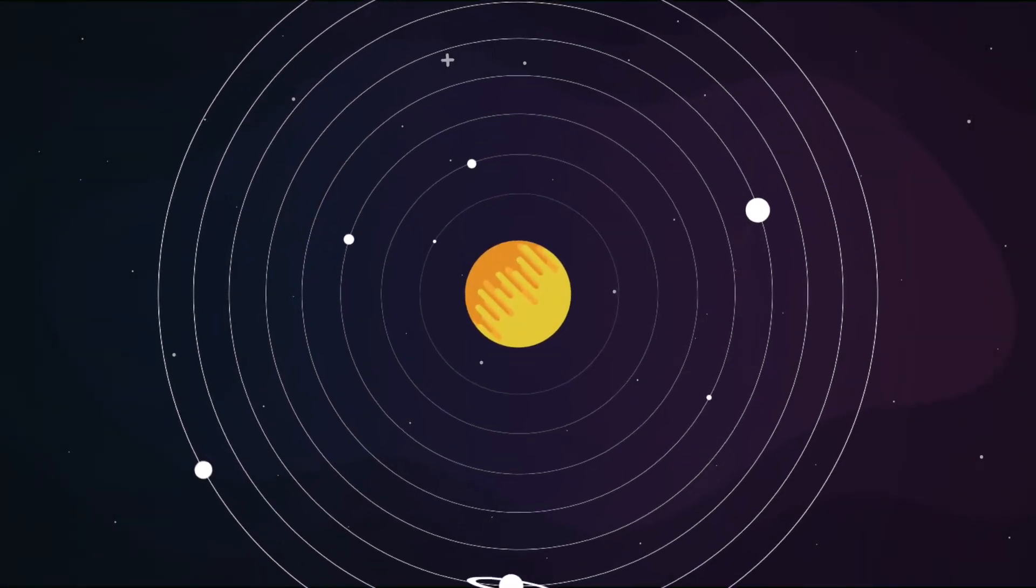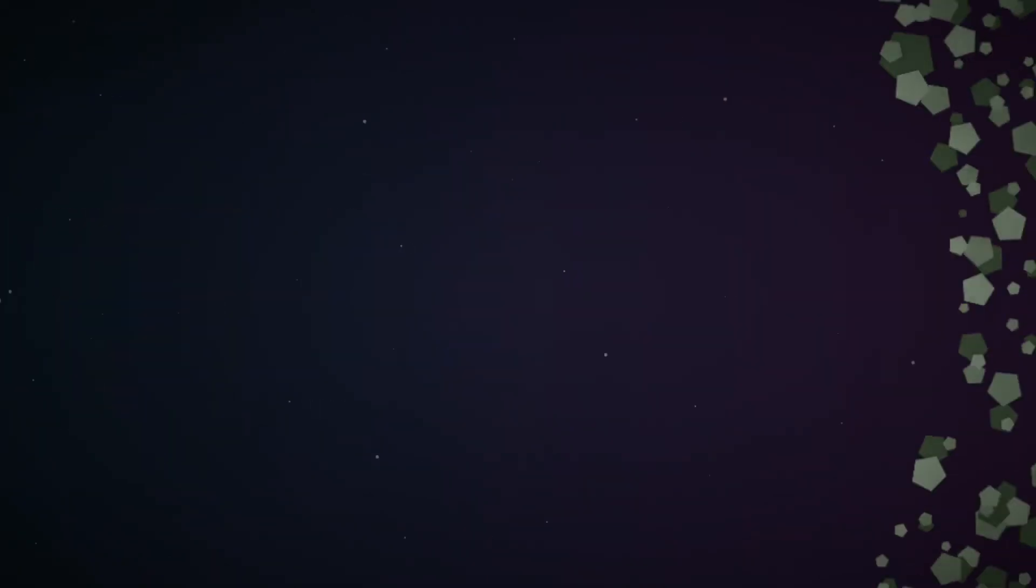It used to be that our solar system had nine planets. The four inner rocky planets, the outer gas and ice giants, and of course Pluto.